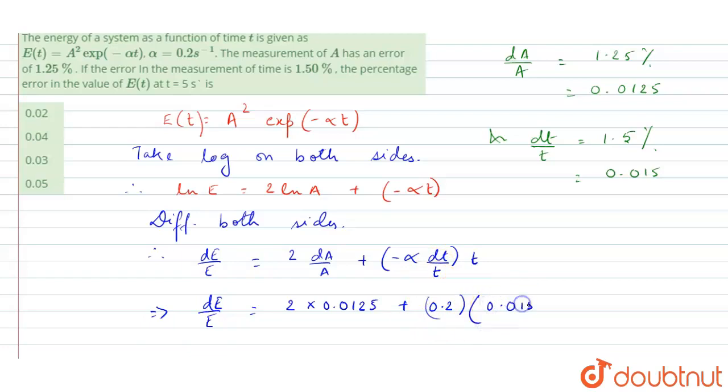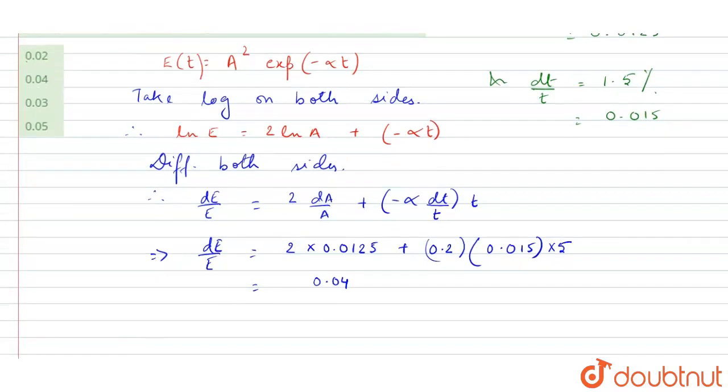This dt/t is 0.015, and t is given as 5. Now just calculate this. You will get 0.04, but we need percentage error, right?